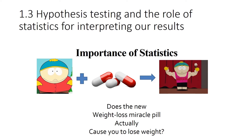We said we use our data to reject or accept our hypothesis, but how do we know exactly when to do that? This is where statistics comes into play. Statistics allows us to quantitatively — that's actually putting numbers to it — know when we can accept or reject our hypothesis. The stats are really important for how we understand our data.